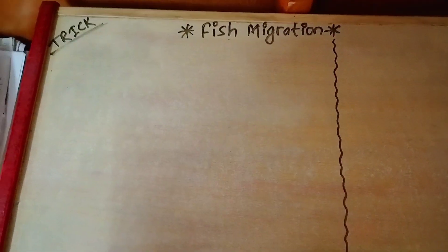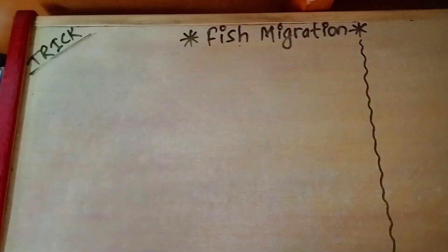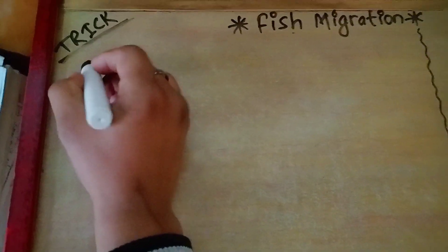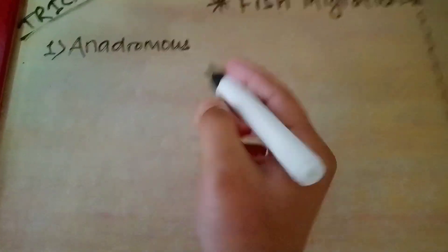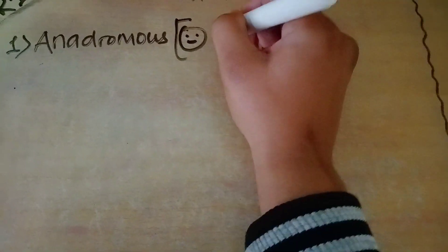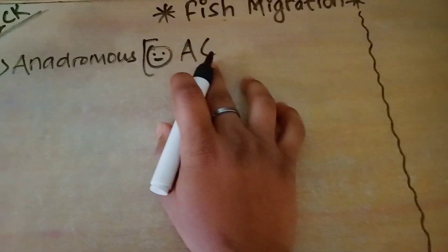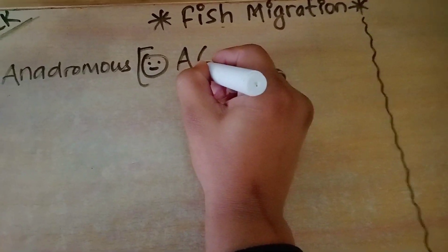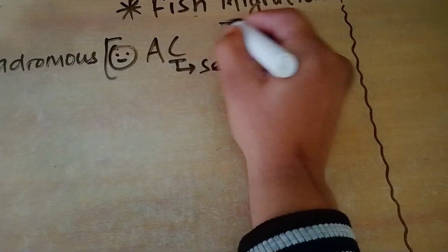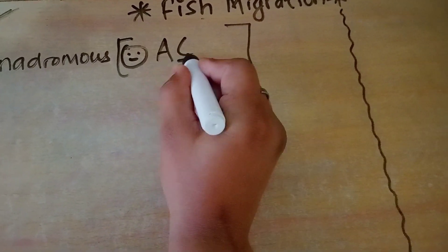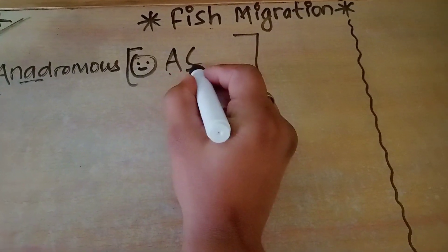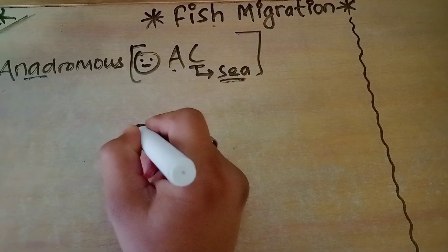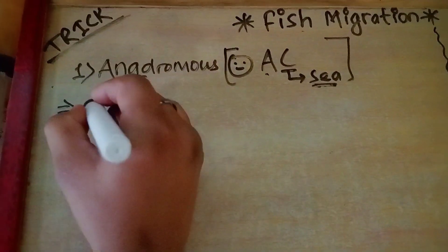Let's begin the topic. The first type of fish migration is anadromous. To remember the definition of anadromous, use this trick: think of 'AC' in your house, but here use 'SEA' instead of 'C'. So anadromous lives in the sea, and along with the 'A' comes the sea — anadromous lives in the sea and migrates to fresh water for breeding.